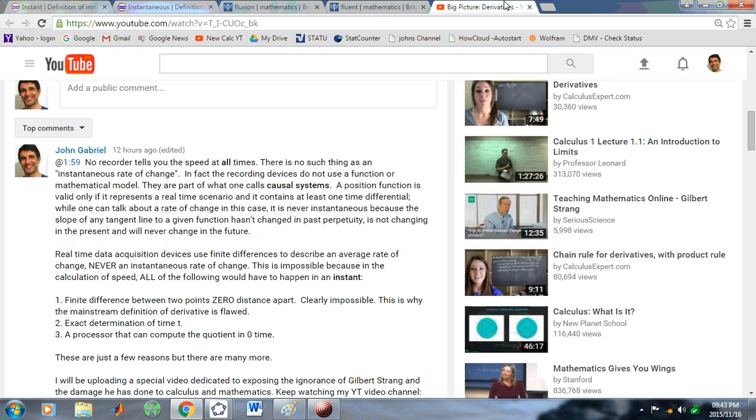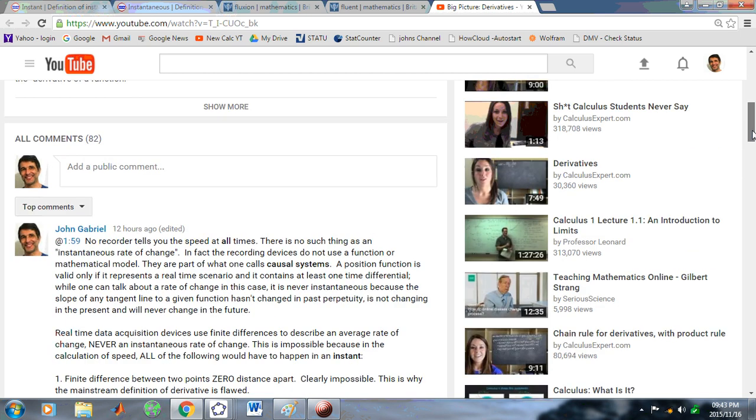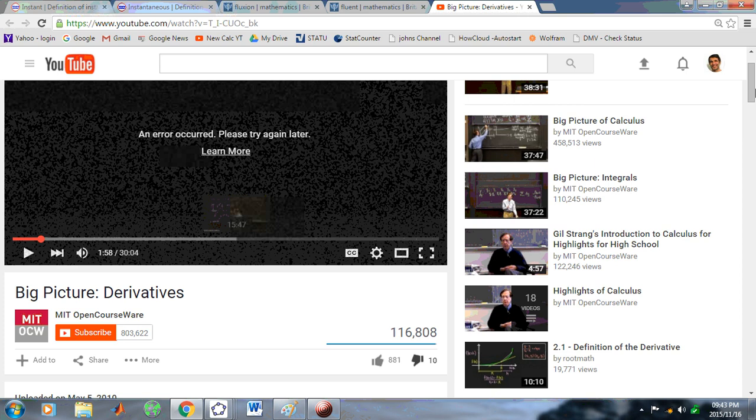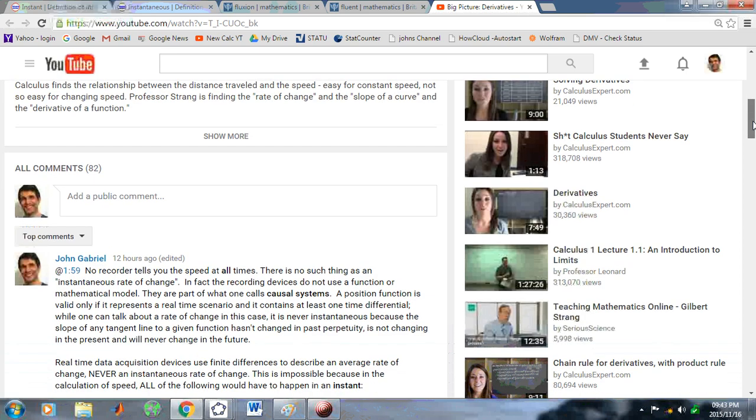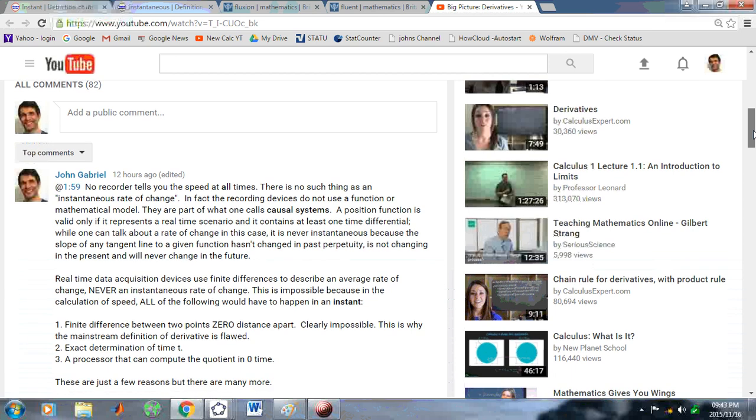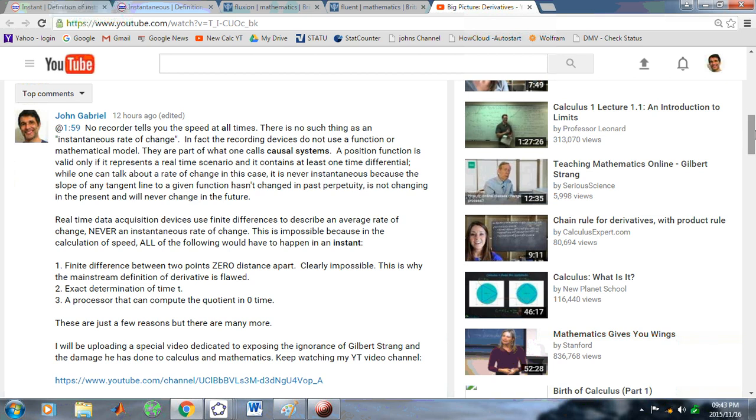If you take a look at Strang's video, he says at 158 that the recording device tells you the speed at all times. But there is no recording device which does that. Because in order for it to do that, it would have to be continuous. And no analog or digital device gives you the exact speed at all times. Real-time data acquisition devices use finite differences to describe an average rate of change. Never an instantaneous rate of change. Because there is no such thing. Did you get that? There is no such thing as instantaneous rate of change.